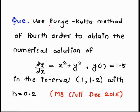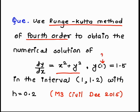In this example, the keywords are Runge-Kutta method. The important one is the fourth order. We need to obtain the numerical solution of dy/dx = x² + y², which is our f(x, y). Here, x₀ = 1, y₀ = 1.5, in the interval 1 to 1.2 — meaning we want to calculate the function value at 1.2. And h = 0.2.